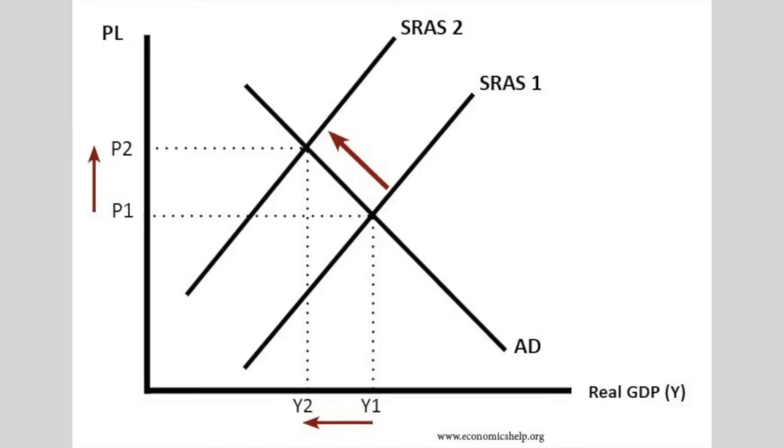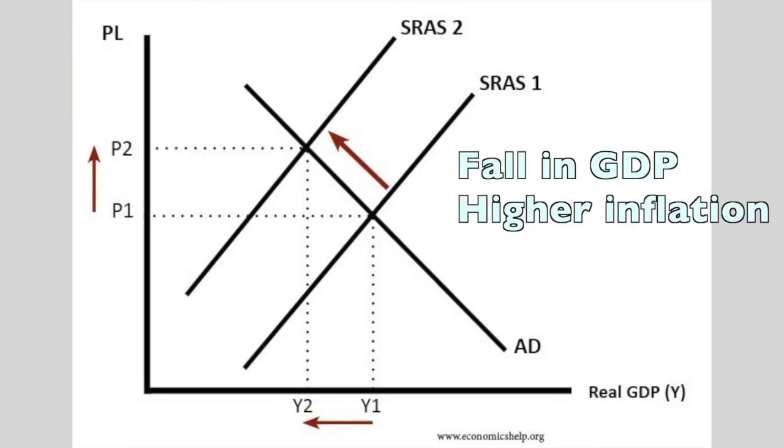From an economic perspective, we see that the aggregate supply curve shifts to the left, and this causes a rise in the price level and a fall in output.